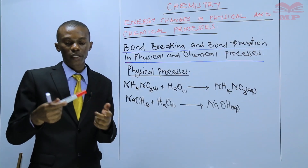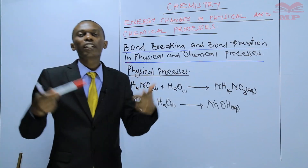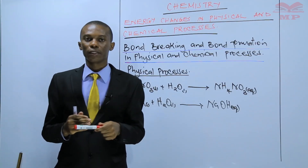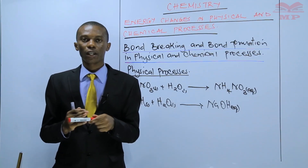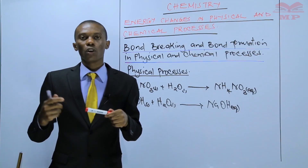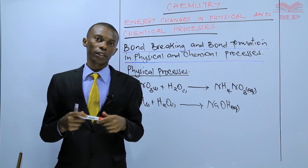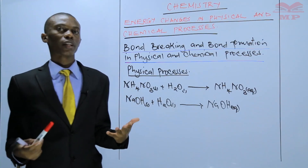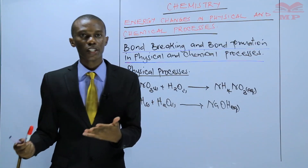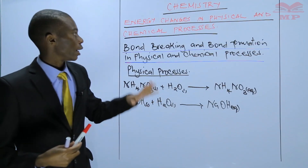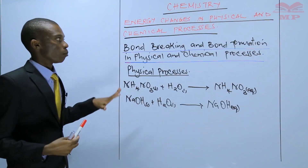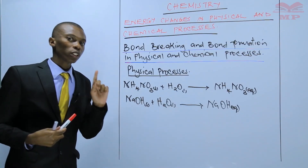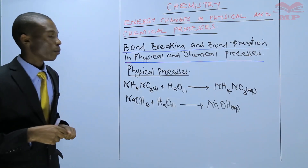Even with the pen I'm holding — if I hit this pen, bonds are going to be broken. When these bonds are broken, new ones will be formed. That is what happens in a chemical reaction. So in any chemical reaction, bonds will be broken and new ones will be formed. These are physical processes.